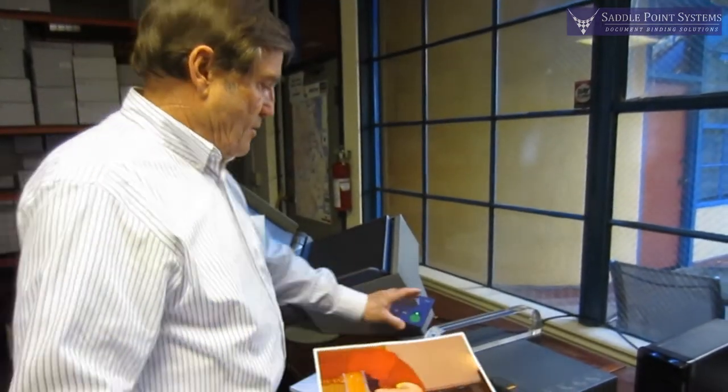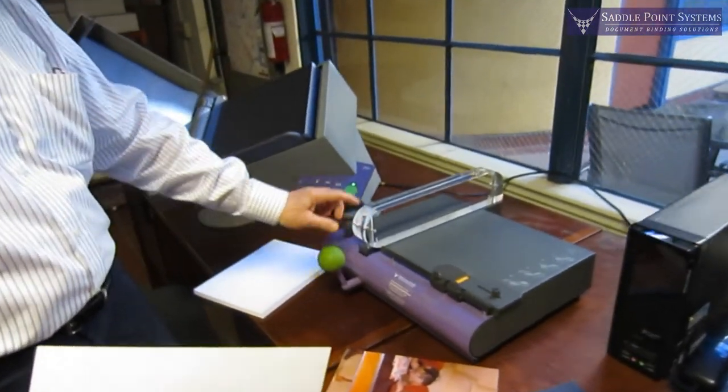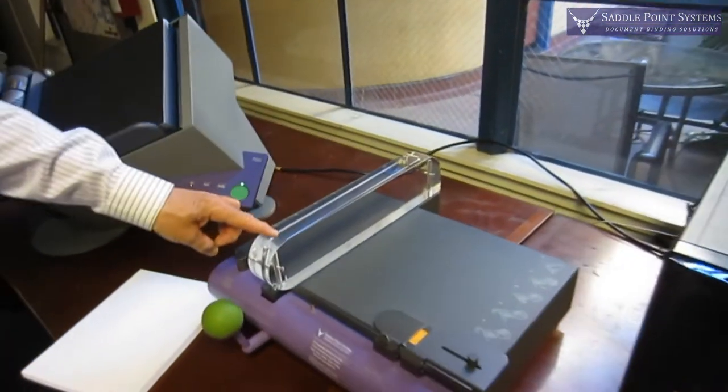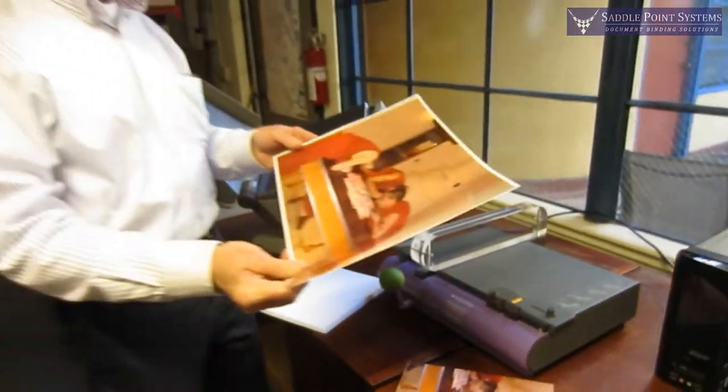And now I'm going to score it using this scoring device. This is the Powis score. Very nice score because it's got a clear die, so you can see the blade of the die, and you can see exactly where you're scoring.